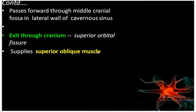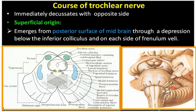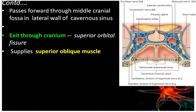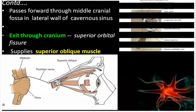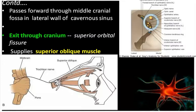It then passes forward, laterally, by the side of the crus cerebri. This is another cranial nerve that passes through the lateral wall of the cavernous sinus, in the middle cranial fossa. It exits the cranium through the superior orbital fissure - through the lateral part of the superior orbital fissure - and enters the orbit to supply the superior oblique muscle.